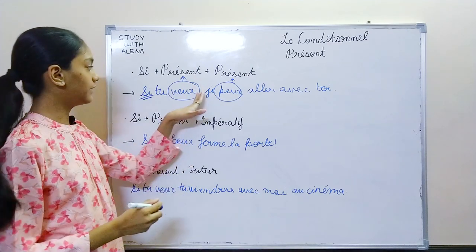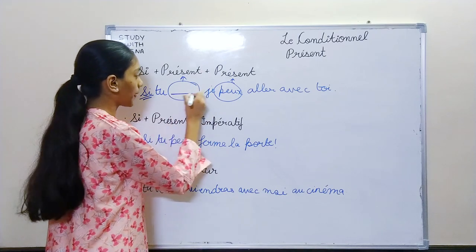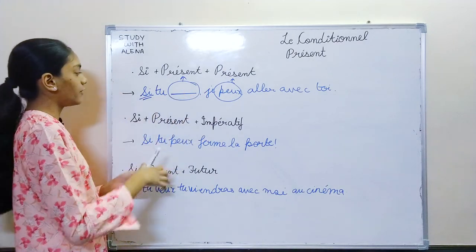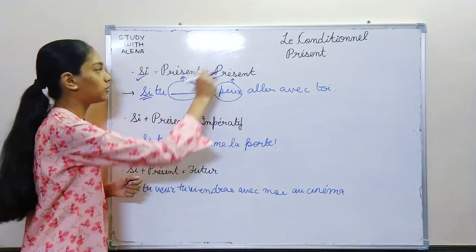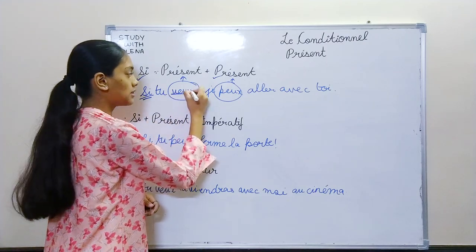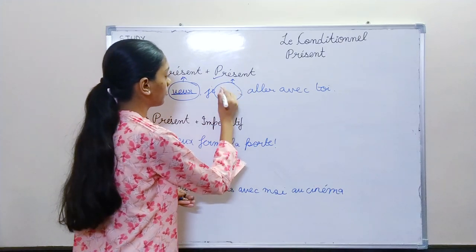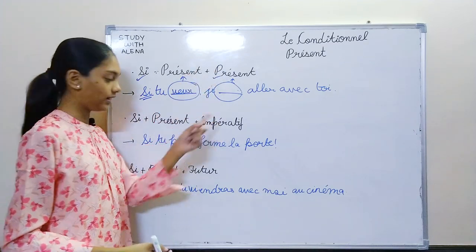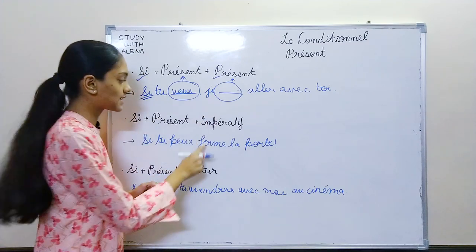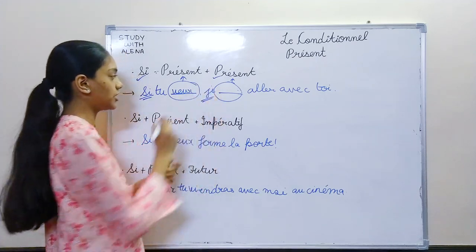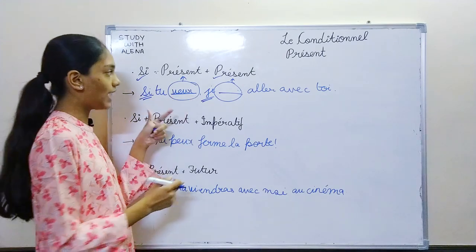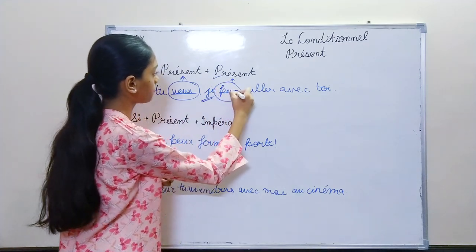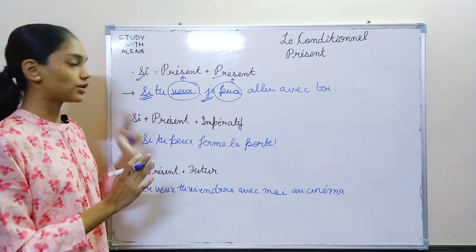If this second verb is a blank and you need to fill it with the correct form — you can see si is there and the first verb is present, so you will put present in the blank. Or if the second part is a blank, you have three options: present, imperatif, or future. But not always can you use imperatif — check the subject. Here it's je, and you can't use imperatif with je. So you can use either present or future. I'll prefer present: if you want, I can come with you.